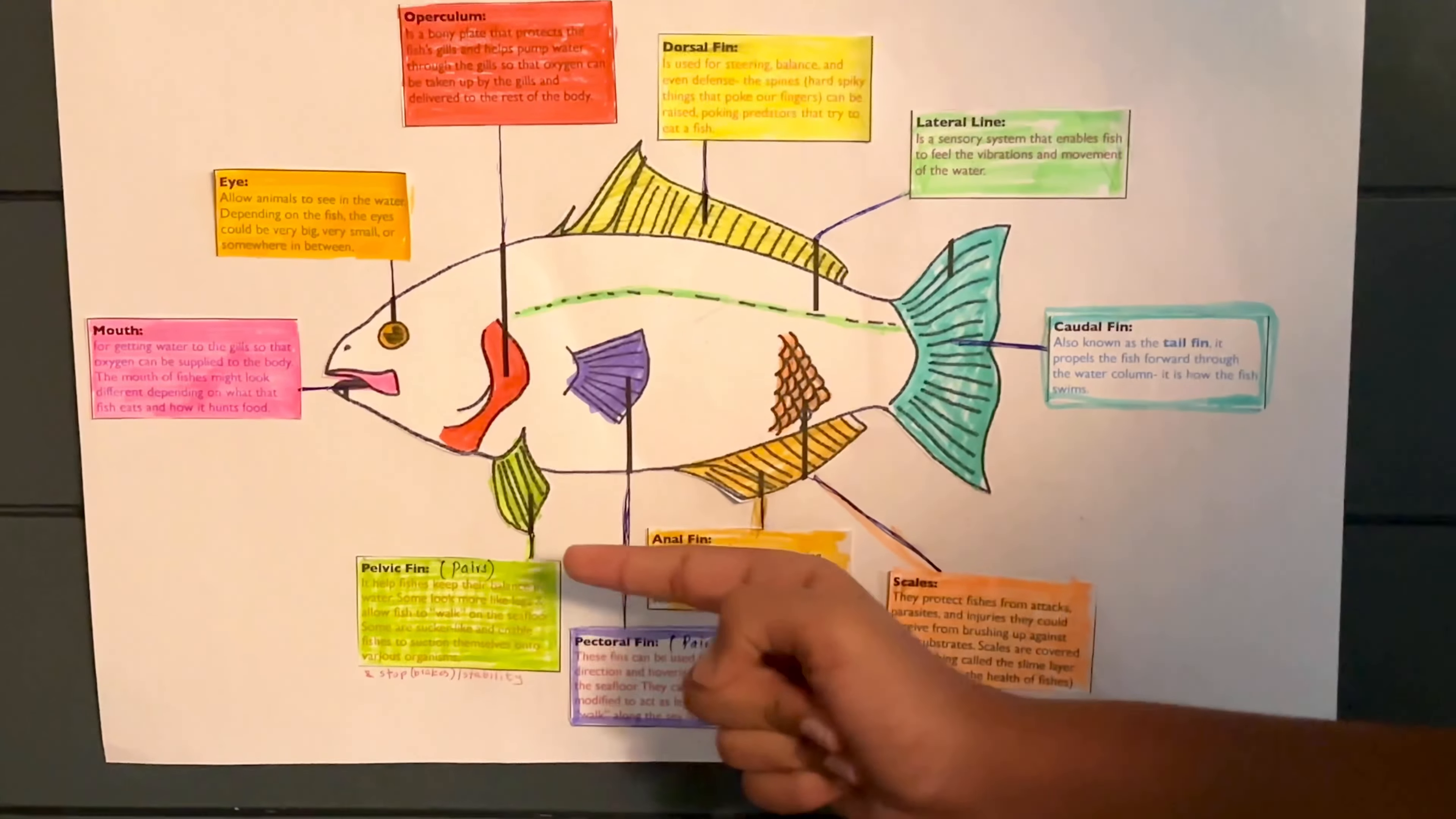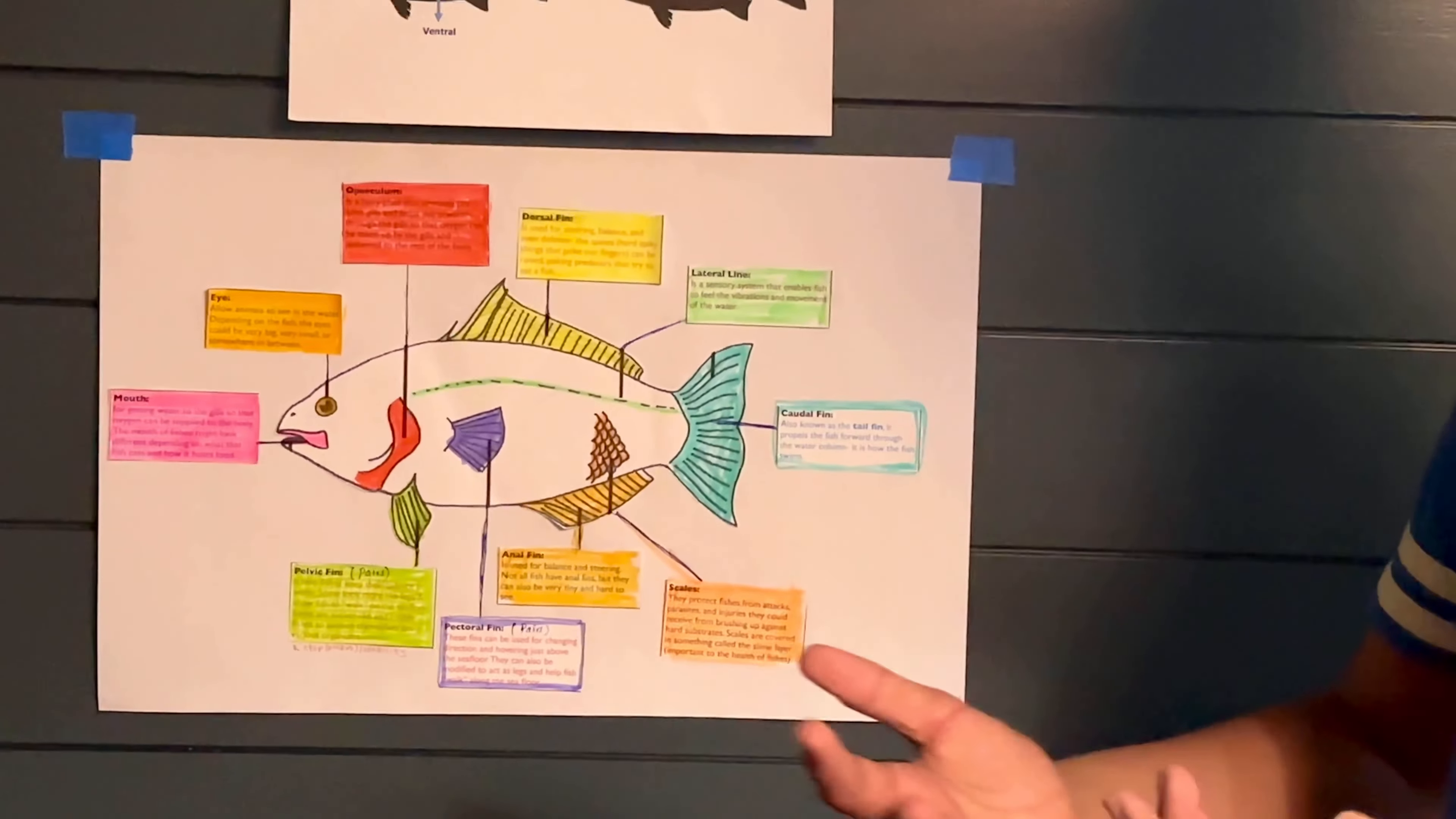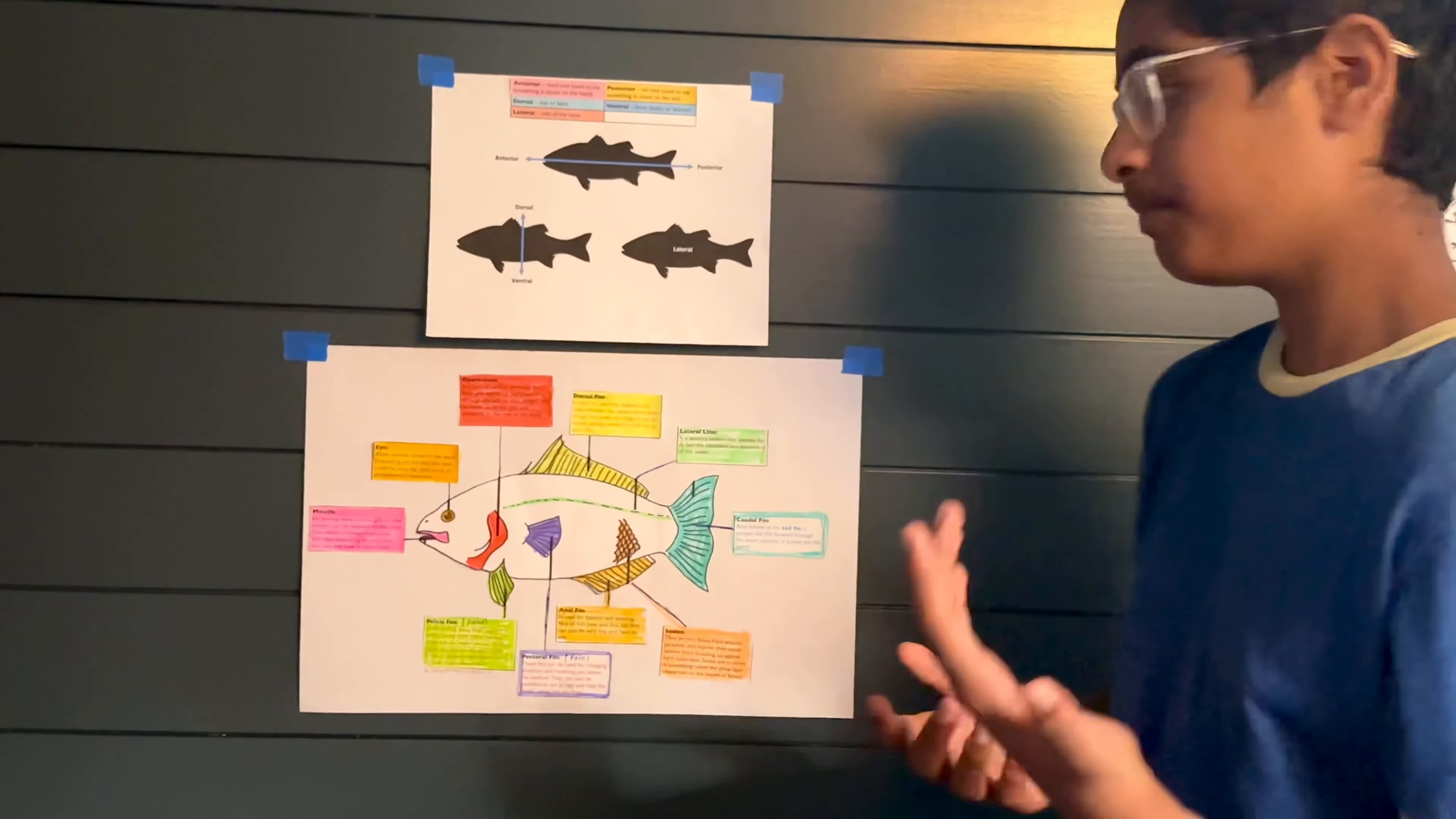First, let's start with the pelvic fins. The pelvic fins help in allowing the fish to be able to stop or brake. Typically, when the fish is moving, it eventually has to slow down for resting or eating. Basically, the pelvic fins are used and they're at the bottom and they help stop the fish and maintain balance and stability.